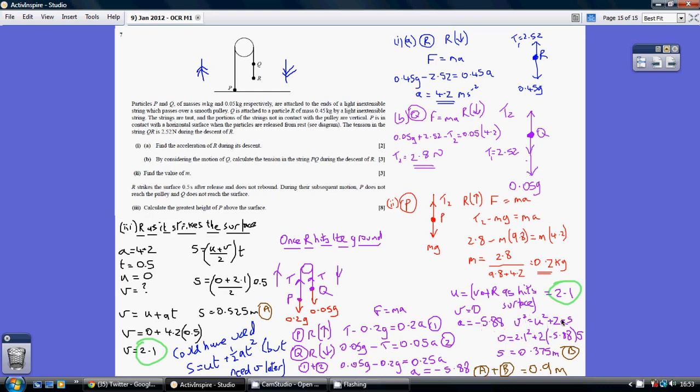Using V squared equals U squared plus 2AS, this allows me to work out distance being 0.375 metres. So the total journey travelled by P is the initial journey while R is going down of 0.525, and then this final journey where it's just P going up and Q going down of 0.375. So 0.525 at 0.375 is 0.9.